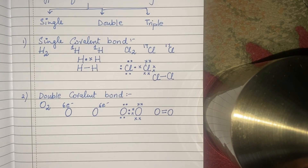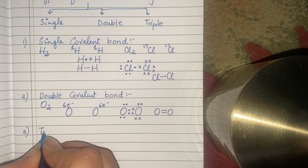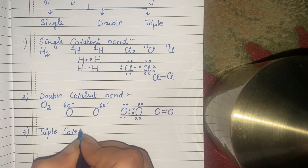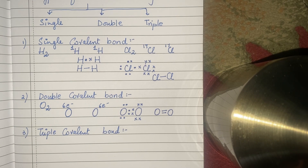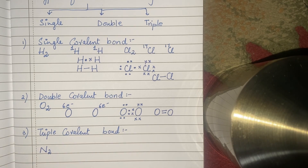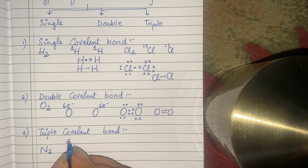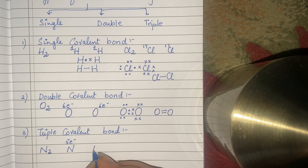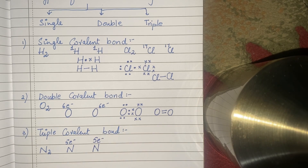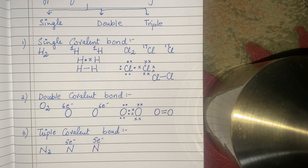अब हम लोग चलते हैं last type of covalent bond की तरफ, which is triple covalent bond. जिस तरह double covalent bond में हमारे पास दो bonds बने, इसी तरह triple covalent bond में तीन bonds बनेंगे. यह उन elements को target करेगा जिनको stable होने के लिए तीन electrons की जरूरत है. हम लोग एक example ले लेते हैं nitrogen की — N2 का molecule. Nitrogen के outermost shell में हमारे पास five electrons होते हैं; nitrogen belongs to group five. दोनों nitrogen को stable होने के लिए तीन electrons चाहिए, so दोनों nitrogen अपने तीन-तीन electrons को share करेंगी.